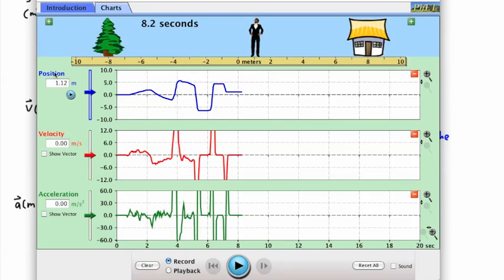Notice what this graph looked like here. This is position or displacement versus time. This is the velocity versus time graph. And this is acceleration versus time. So let's just focus on this blue graph here.